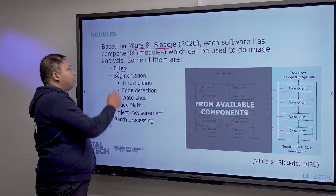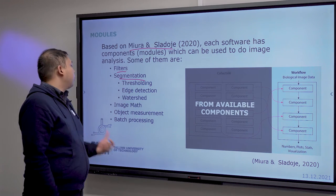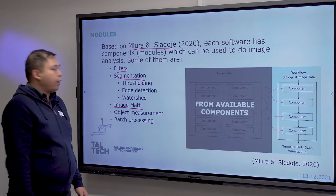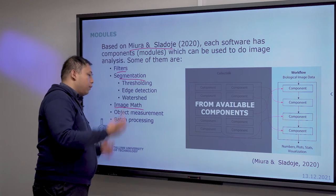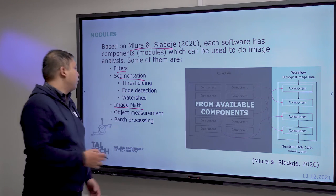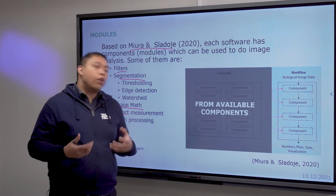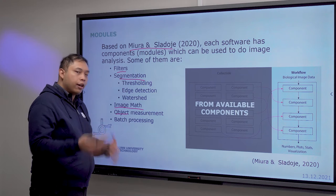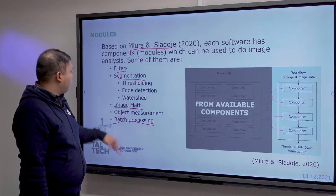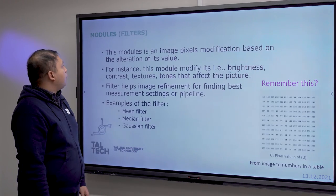There are several example modules you can use: first, filters and how to segment objects or select your objects; second, image math; and third, once you have segmented or selected your objects, you can measure them. Finally, since you will likely need to analyze more than one image, batch processing is needed.